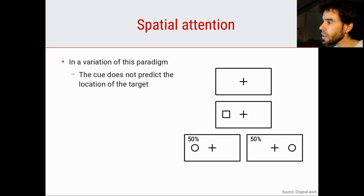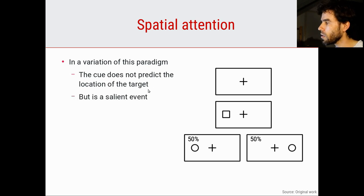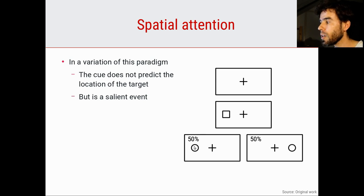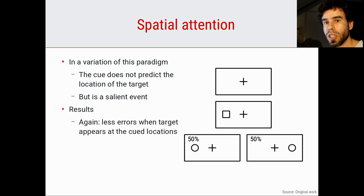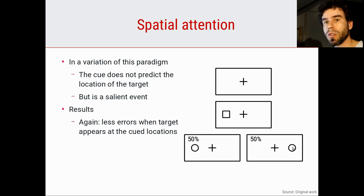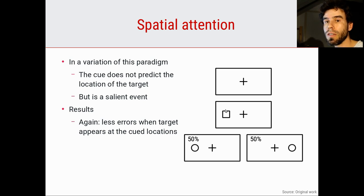There's a variation of this paradigm in which the cue does not predict the location of the target, but is simply a very salient event. In this case, the cue is a square, and participants have to ignore the square. The location of the square does not predict where the circle is going to appear. But the square is suddenly presented — it is a salient visual event that automatically captures your attention, like a light that flashes. What you find is essentially the same pattern of results: if the circle appears on the side of the cue, participants make fewer errors and respond faster than when the circle appears on the other side.